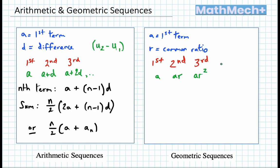And then ar squared, ar cubed, ar to the power of 4, and so on. So ar n minus 1. So that's our nth term.